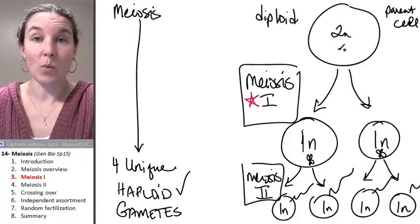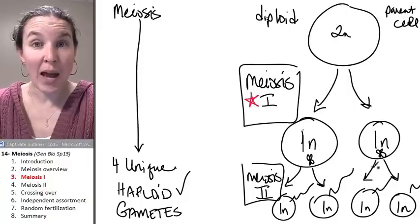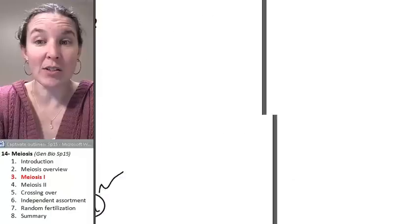Meiosis I. We're going from one diploid cell to two haploid cells. And the amazing thing that I'm going to tell you is this.